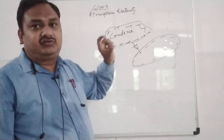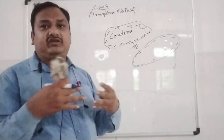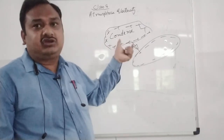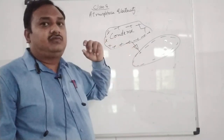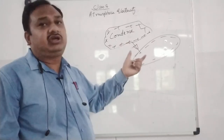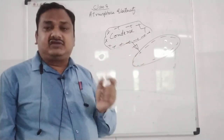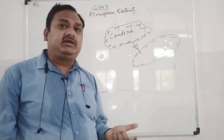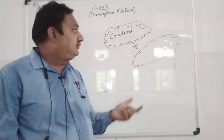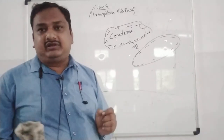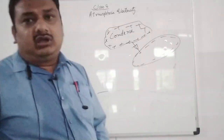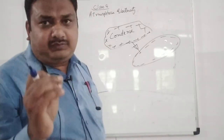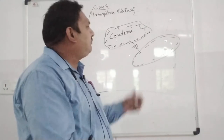Electric discharge takes place from one cloud to another cloud. When two oppositely charged clouds approach each other, there is a large flow of charge from positive to negative, and we see that discharge in the form of lightning in the sky. That is how lightning takes place.